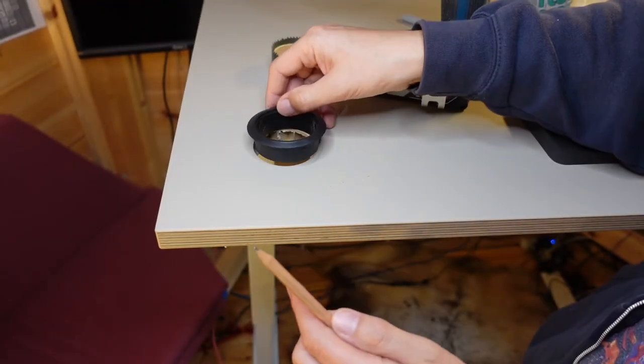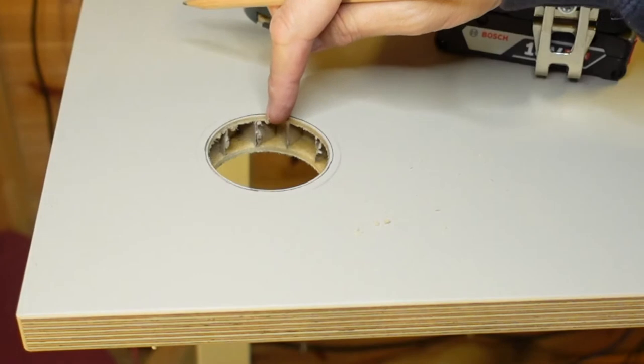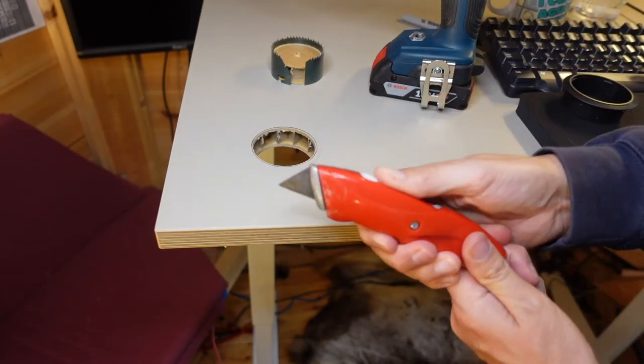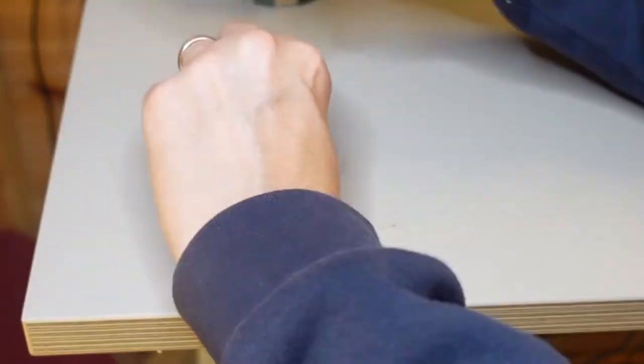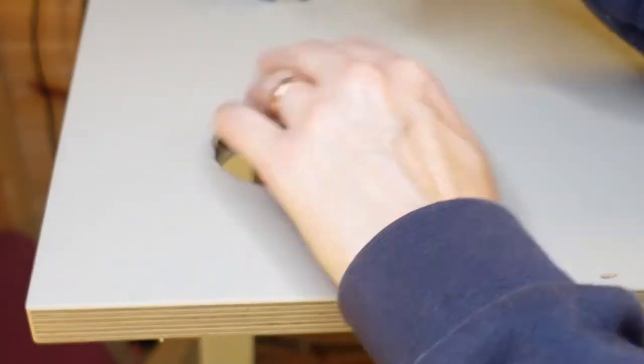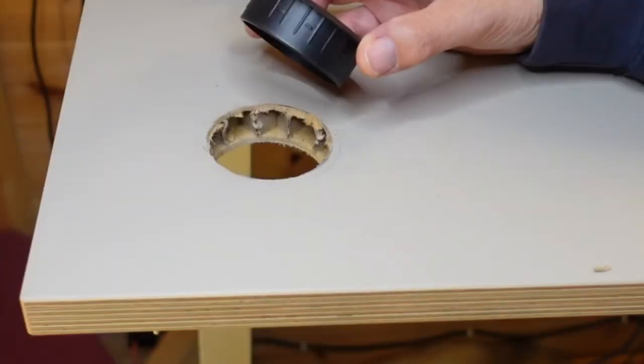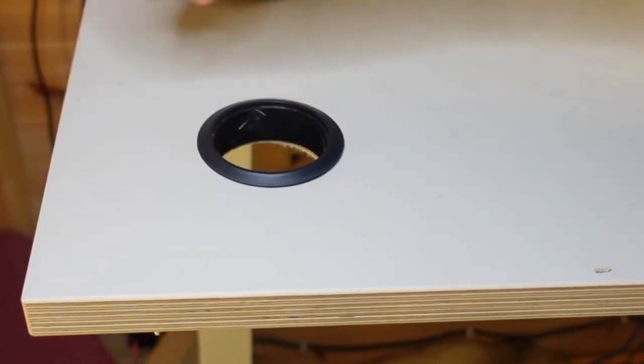I'm going to mark out how much extra I need by just drawing around it there. So now I need to cut out pretty much that much with the knife. And the very high quality Ikea desk is cutting really easily. So let's try that. So I'll push the holder in. Whoa! It's a perfect fit. Great stuff.